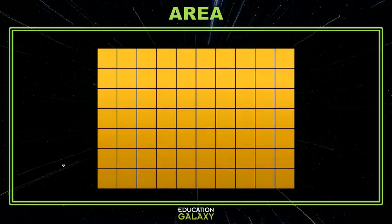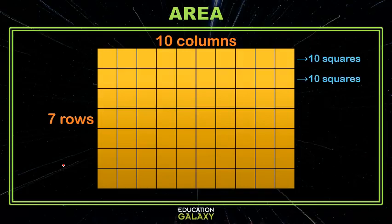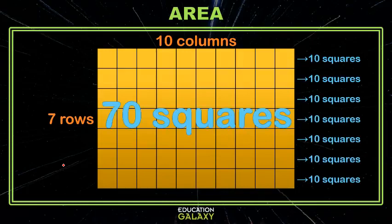Now you might remember when we did arrays that we found out how many rows we had and how many columns we had and then we could find by adding how many squares we have in all. So there'd be 10 in the first row, 10 in the next row, so 10, 20, 30, 40, 50, 60, 70, we'd know we have 70 squares.